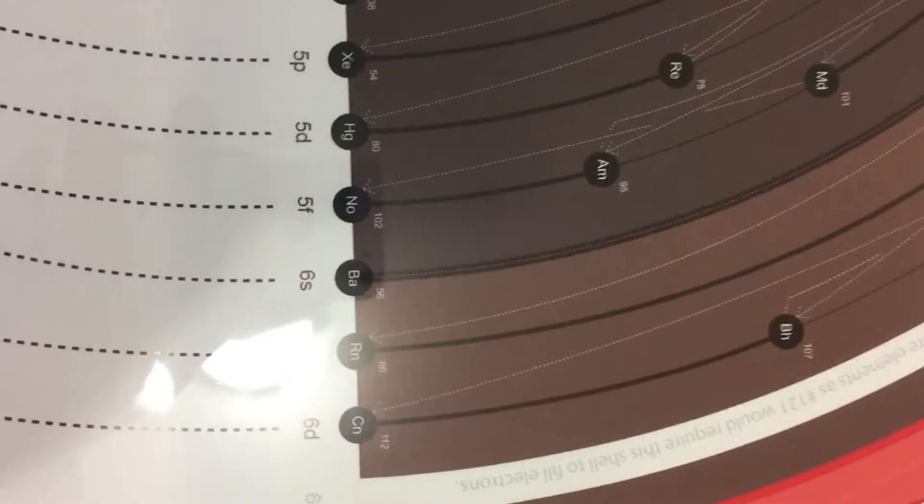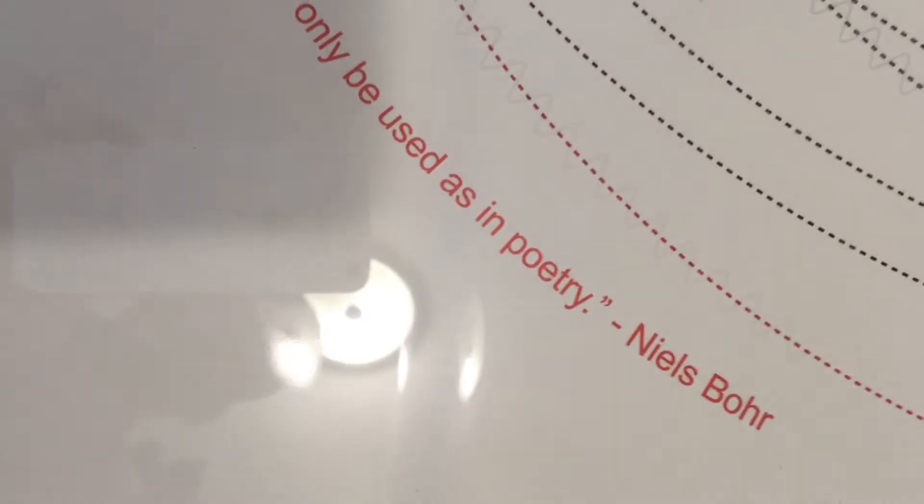Every single element on the periodic table is traced in the electron fill order. And then this great quote by Niels Bohr: 'We must be clear that when it comes to atoms, language can only be used as in poetry.'